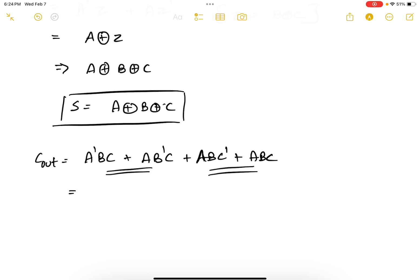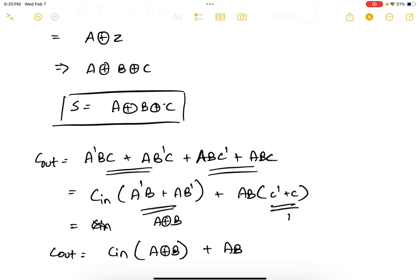And from these two terms I can take C as a common parameter. So C in, or C times (A' B plus A B') or A B times (C' plus C) which is one. And this is A XOR B. Therefore C out would be (C in)(A XOR B) or A B.